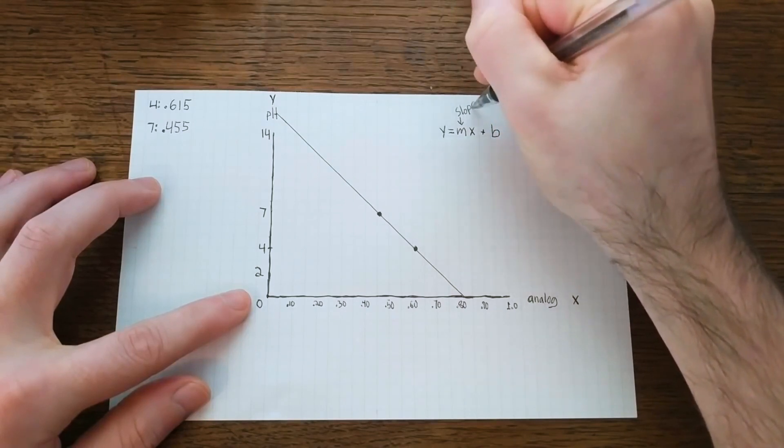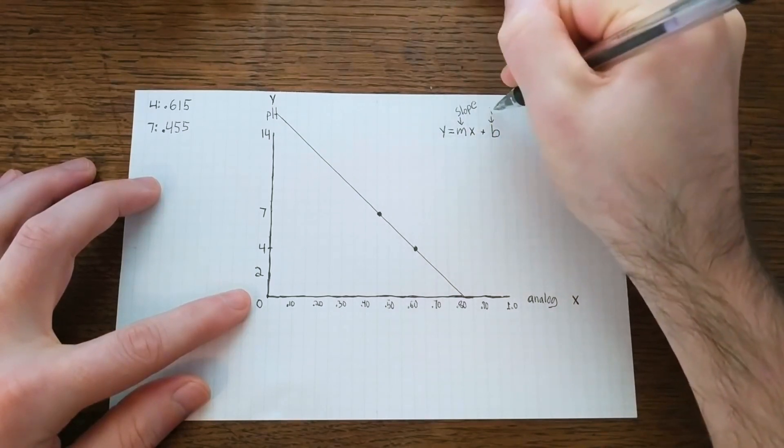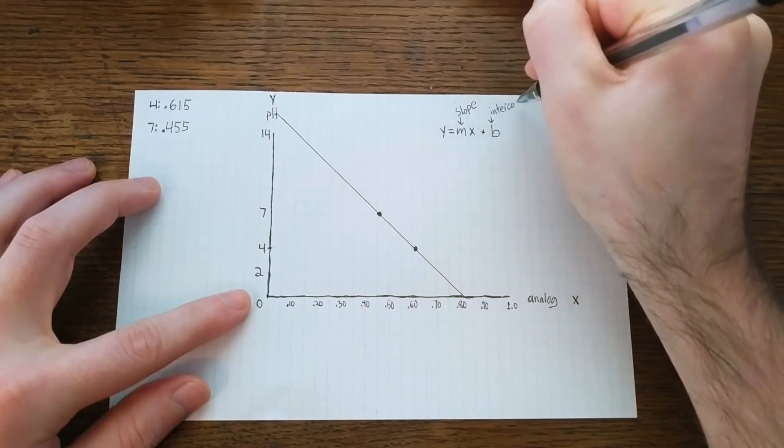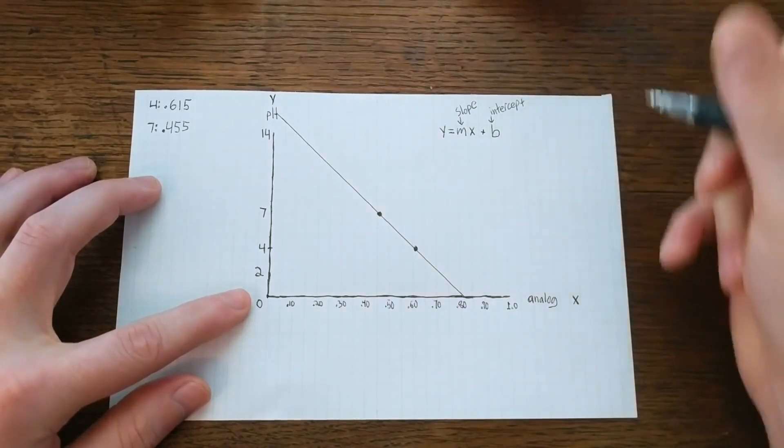m being the slope of our line, and b being the y-intercept of our line. So now we need to calculate our slope and our intercept.